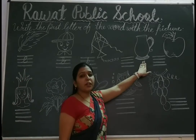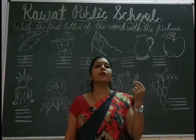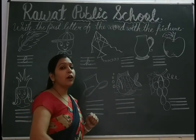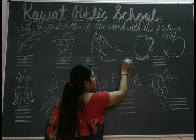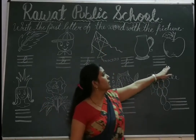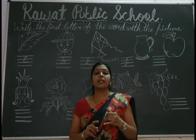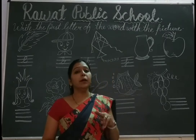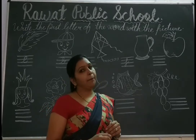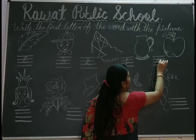Next, it is a picture of Jug. And the spelling of Jug is J-U-G. The first letter is J. So write it here: J. Next, it is a picture of Ape. A-P-E. The first letter of Ape is A. So write it here: A.